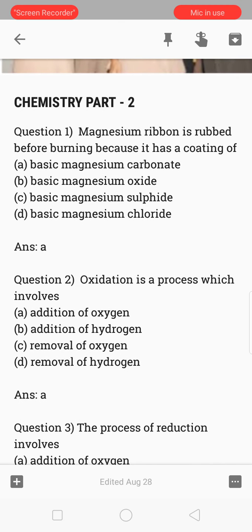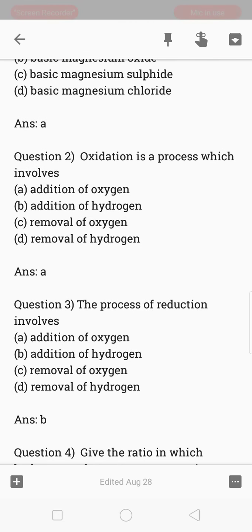Question number 1: Magnesium ribbon is rubbed before burning because it has a coating of basic magnesium carbonate. Oxidation is a process which involves addition of oxygen.